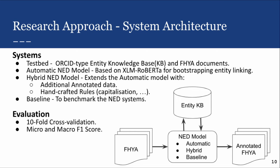To increase quality, each document is annotated by three different people. Our first NED model is the automatic model, which uses a supervised learning approach using documents from the 500-year archive. The second model extends this by incorporating additional data and handcrafted rules. Finally, we have a baseline model used to benchmark our NED systems, taking a simple probabilistic approach. The baseline is required because different datasets have very different levels of ambiguity within their entities. All models will be evaluated using 10-fold cross-validation with micro and macro F1 score as the primary means of evaluation.